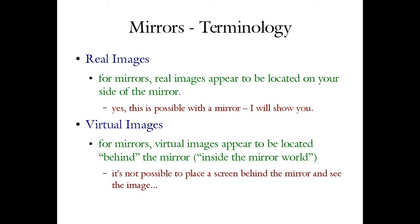To drive this home — for mirrors specifically: real images appear to be located on your side of the mirror, and it is actually possible to capture them on a screen or camera. Virtual images for mirrors are images that appear to be located behind the mirror, sort of inside the mirror world, even though there's no actual world there. It is not possible to place a camera or screen behind the mirror and see a virtual image.